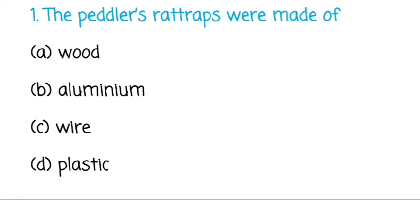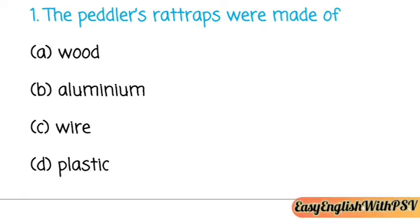Question number one: The peddler's rat traps were made of — Wood, Aluminium, Wire, or Plastic? Hopefully you have marked the correct option. The answer is: Wire.